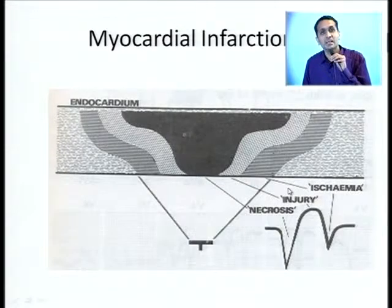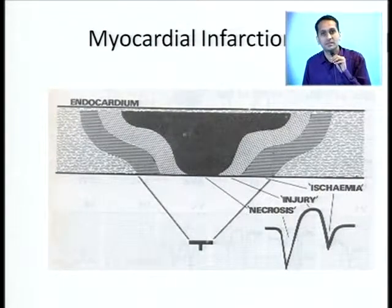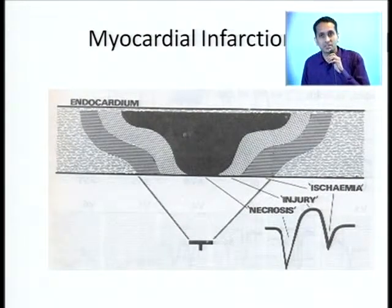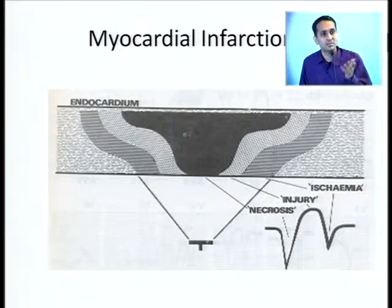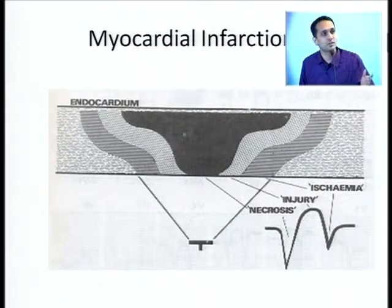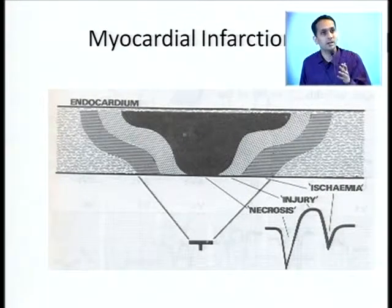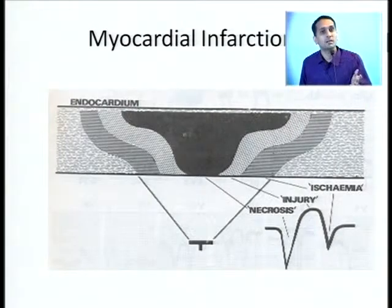The surface ECG need not always pick up Myocardial Ischemia. When we talk of ischemia, we talk of the spectrum of acute coronary syndromes. You have chronic stable angina where your resting ECG is absolutely normal. You have unstable angina which is classified as low risk, intermediate risk, and high risk. Low and intermediate risk unstable angina — again, your resting ECG is normal.